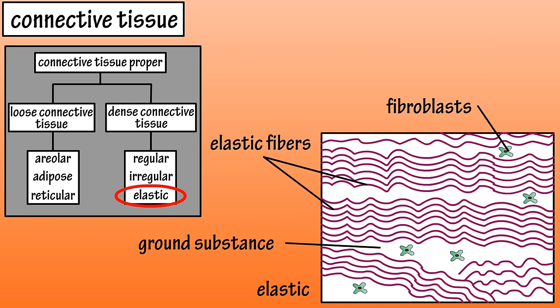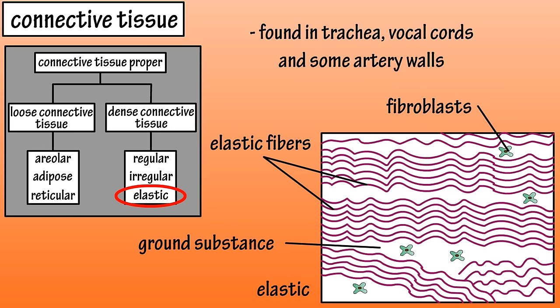Elastic connective tissue consists of densely packed elastic fibers with fibroblasts scattered throughout. It is found in the trachea, vocal cords, and walls of some arteries.